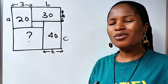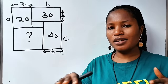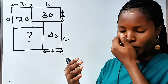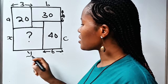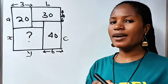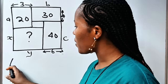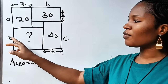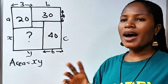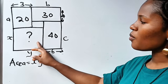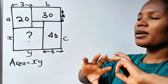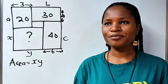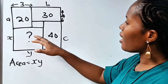Let us first understand what we want to do, because that is the main thing. We are asked to find the area of this place, and this place is a rectangle. If we call this side x and this side y, the area of a rectangle is equal to length times breadth. So the area is x multiplied by y. Once we get the value of x and y, we multiply both together to get the area.